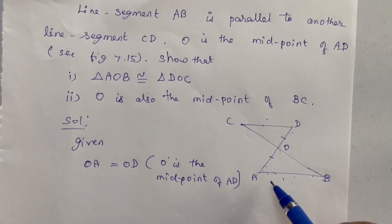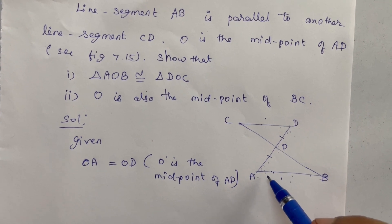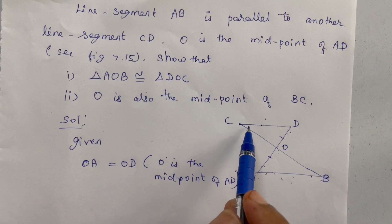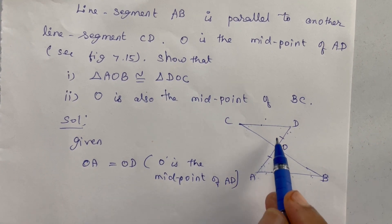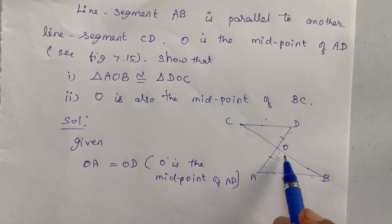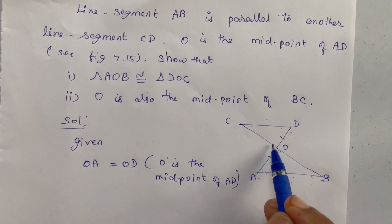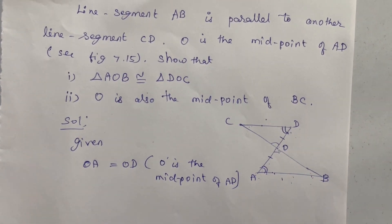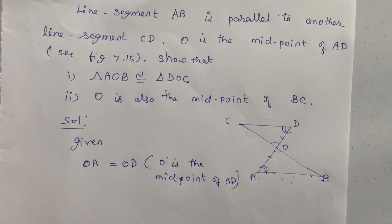Because these two are alternate interior angles of a transversal. Angle B equal to angle C. These two also equal. Angle A equal to angle D, alternate interior angles of a transversal.